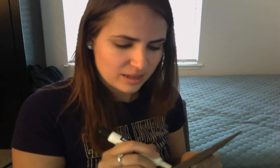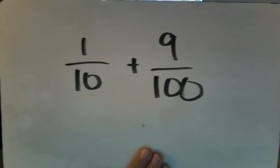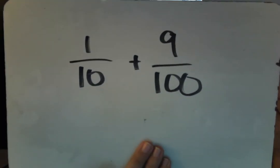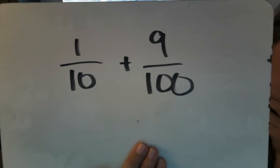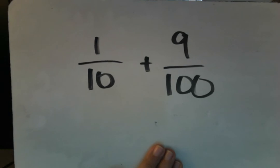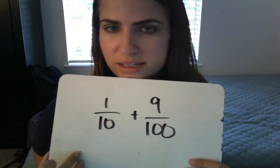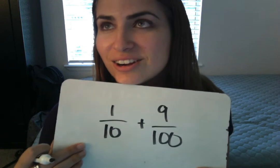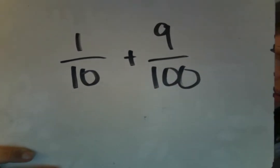So what I would like for us to do — on your paper, I want you to write the following addition problem: one tenth plus nine hundredths. Remember, in the problem we just reviewed together, we had two tenths, and we found that two tenths was equivalent to twenty hundredths. That might be helpful in solving this problem. I want you to solve this any way that makes sense to you, but put your answer in decimal form. Maybe pause the video and solve this problem: one tenth plus nine hundredths.